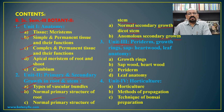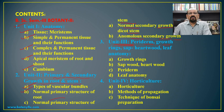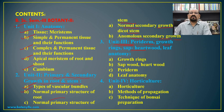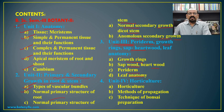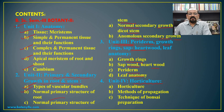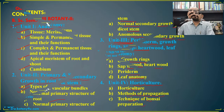Unit 3 includes periderm, growth rings, sapwood, heartwood, and leaf anatomy. Unit 4 is the skill-based unit which includes horticulture, methods of propagation, and technique of bonsai preparation.